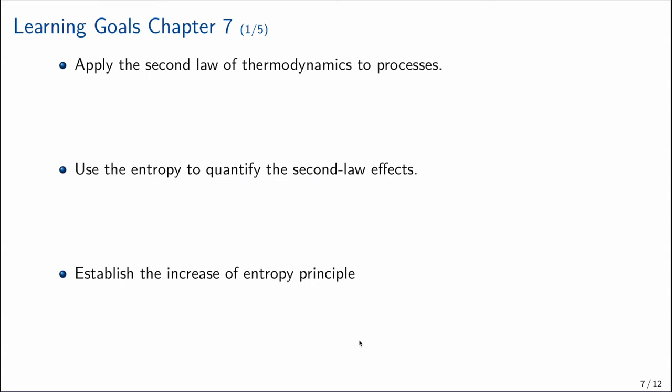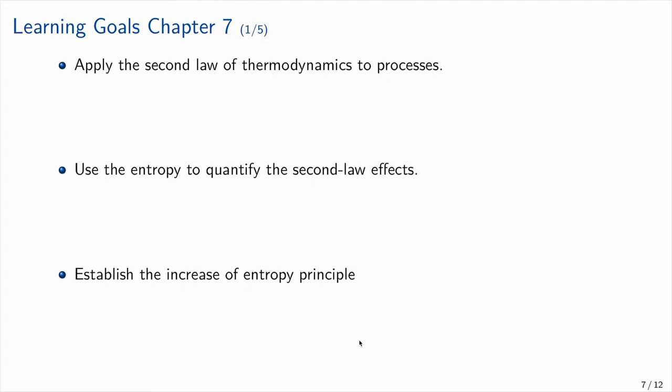Now we apply the second law to a process. From Chapter 7, entropy is a property — like pressure or temperature — and therefore we can write a balance for it. The entropy balance is more delicate than the energy balance because they are not the same. We use entropy to quantify the second-law effect.